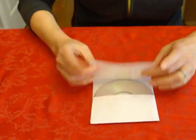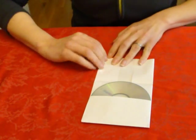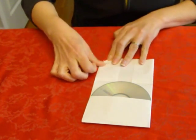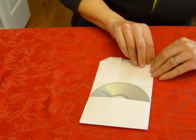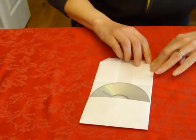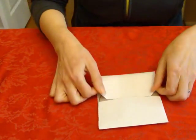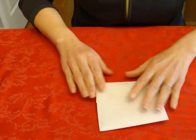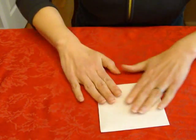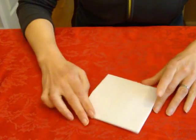To give it a more polished look, fold small triangles at the top and tuck it in. And there's your CD case.